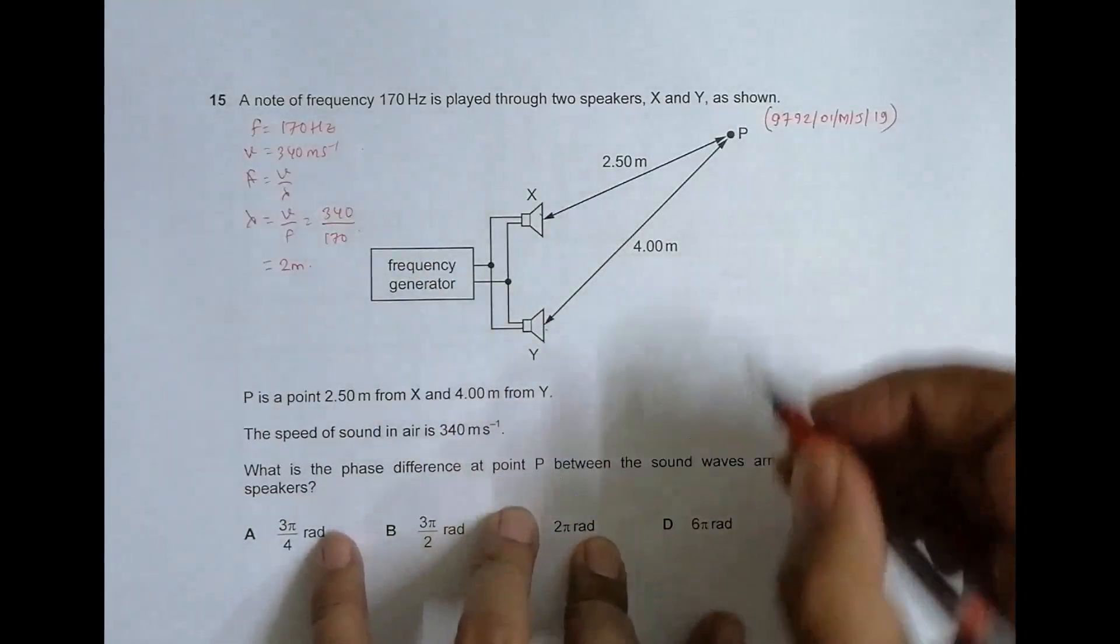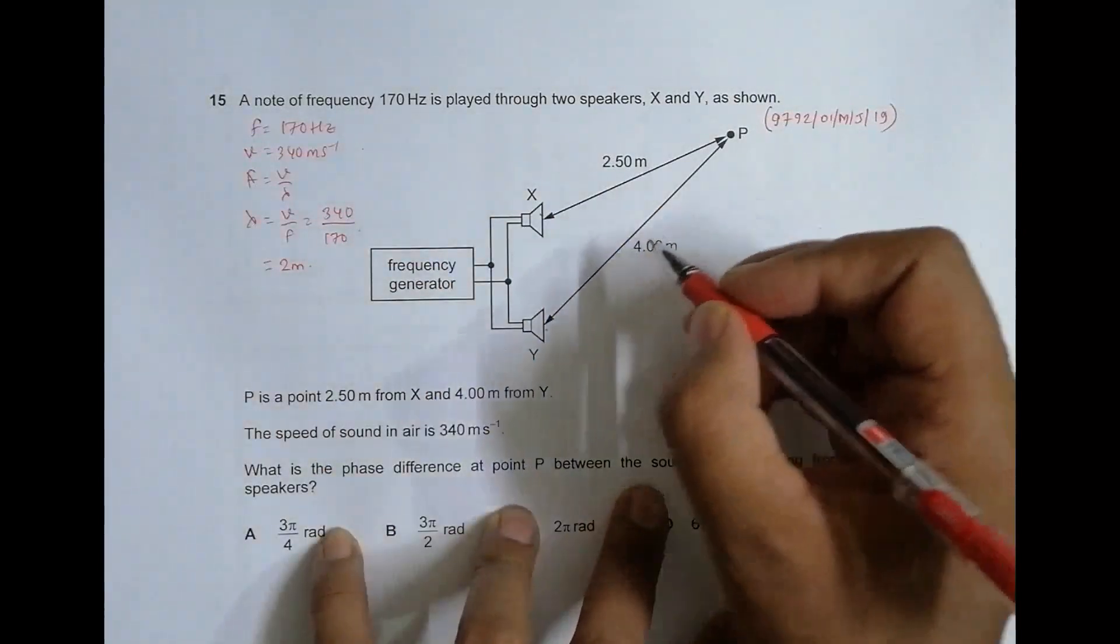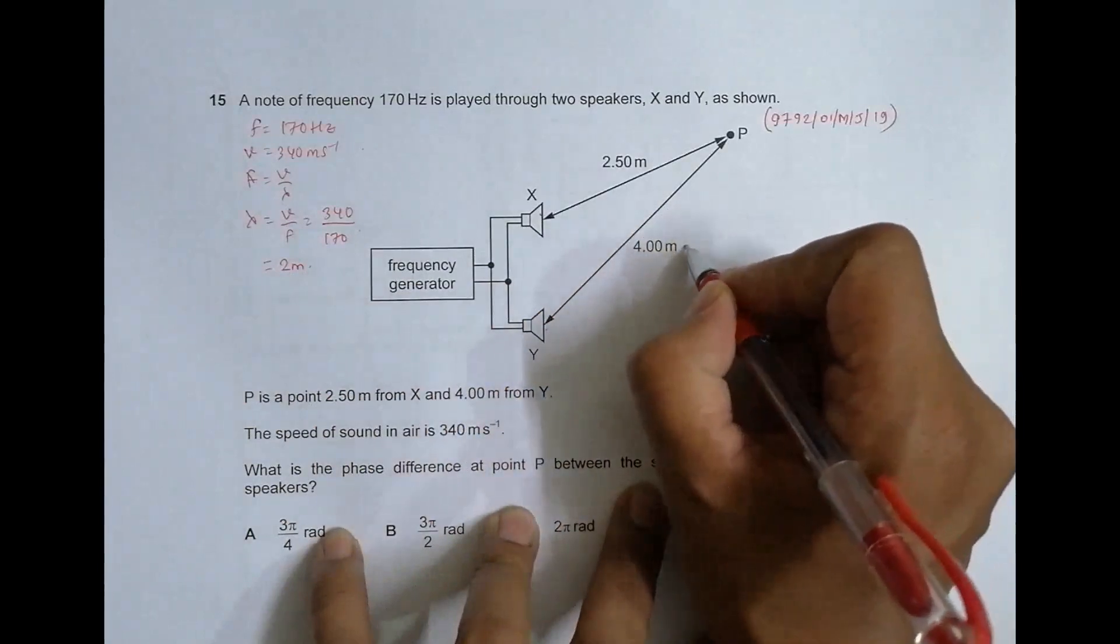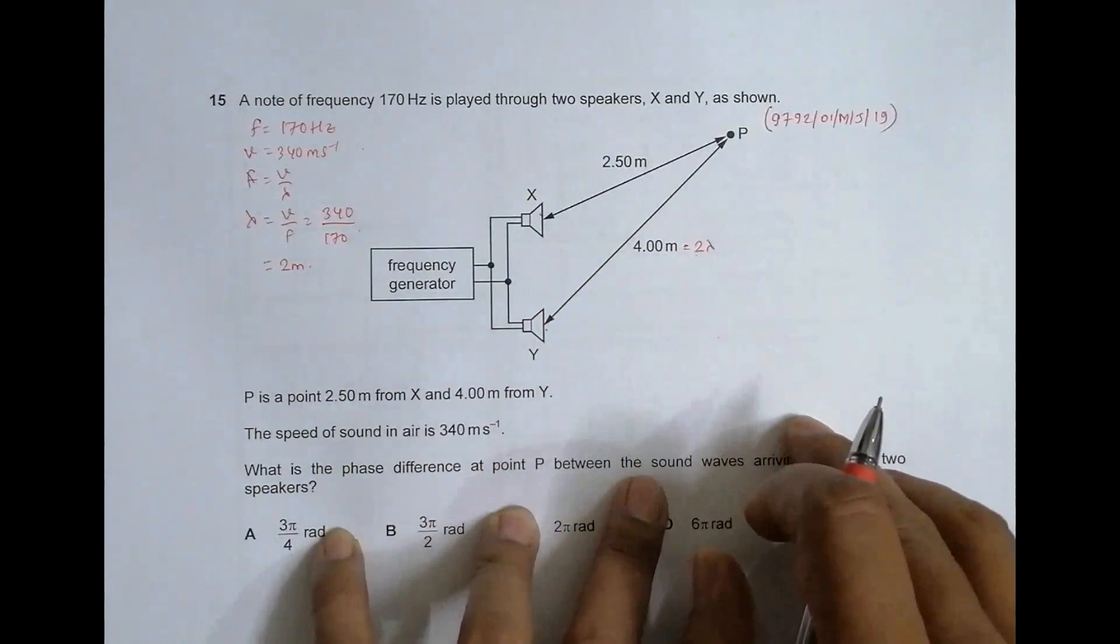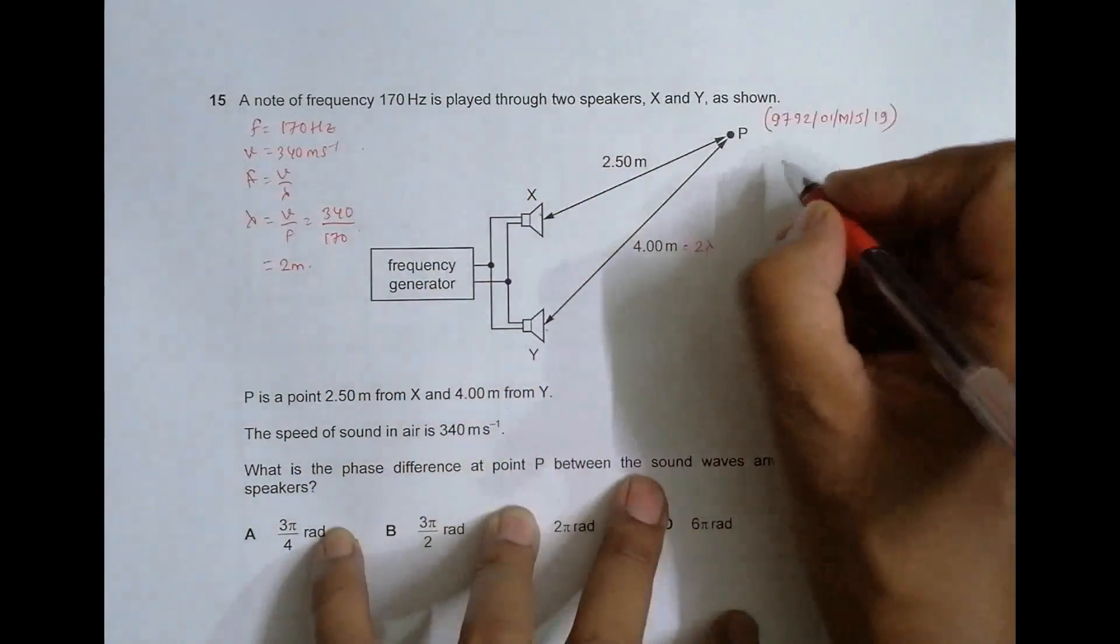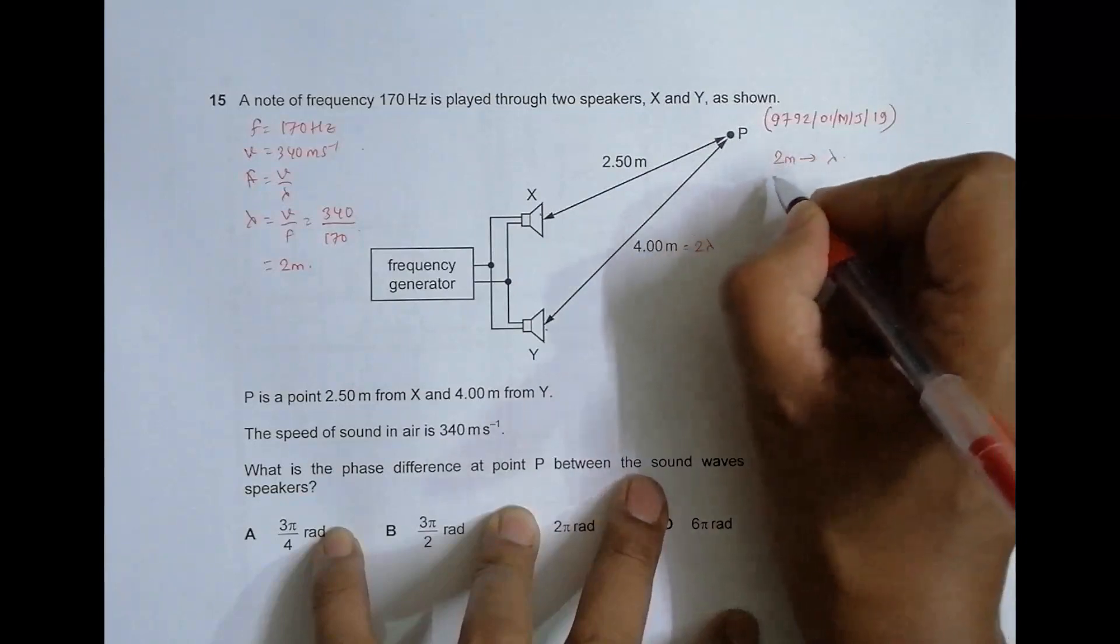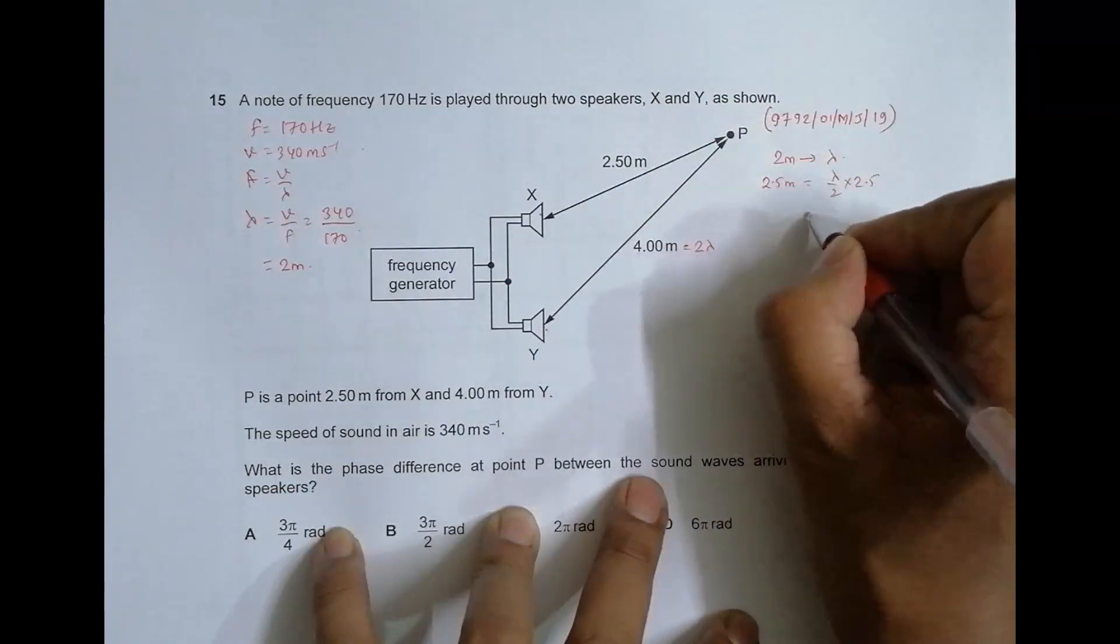Since lambda equals 2 meters, we have 4 meters here, which means it's equal to 2 lambda. Similarly, 2.5 meters will be equal to lambda by 2 times 2.5, which should be 1.25 lambda. So this distance equals 2 lambda and this one equals 1.25 lambda.